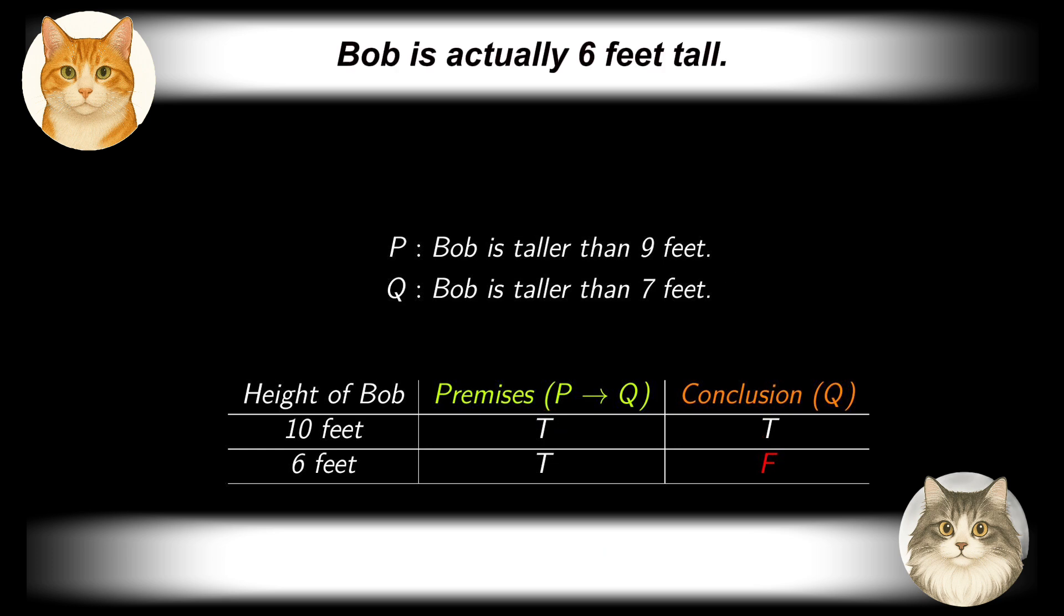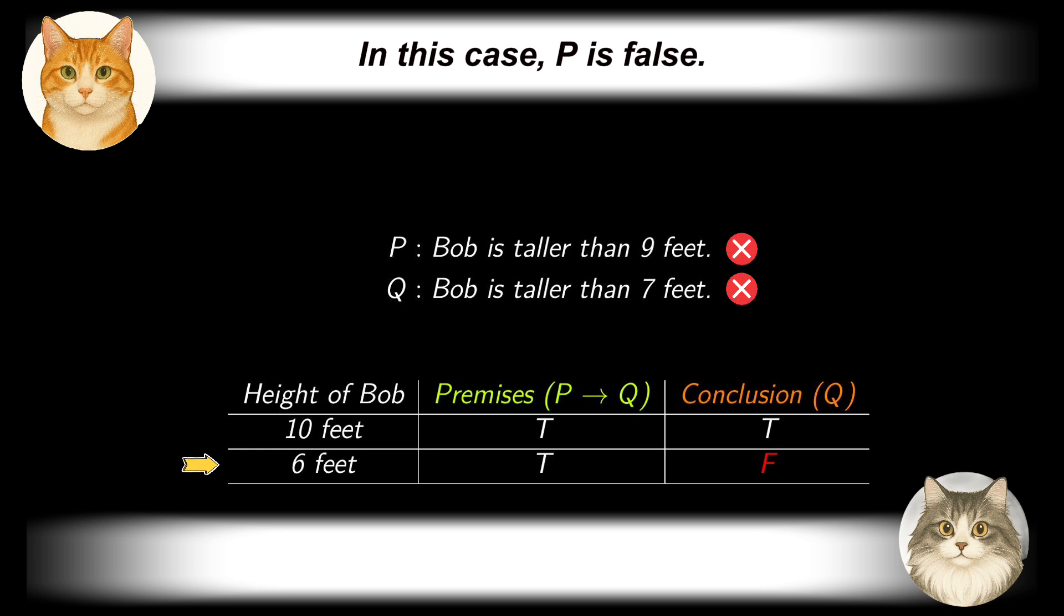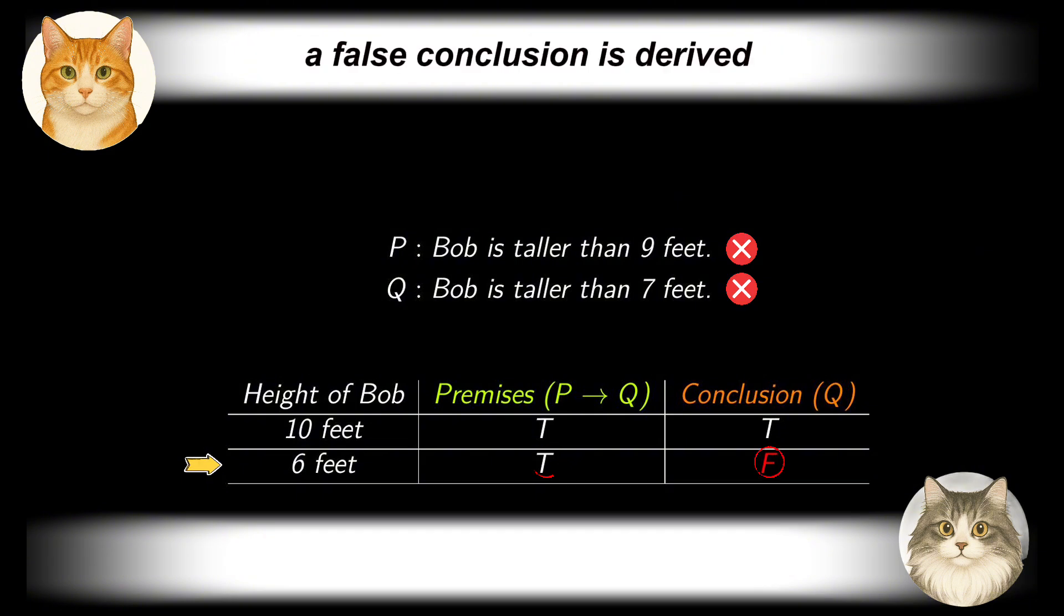Scenario 2: Bob is actually 6 feet tall. In this case, P is false, and the premise 'if P then Q' is vacuously true. This time, using the rule of inference, a false conclusion is derived from a true premise.